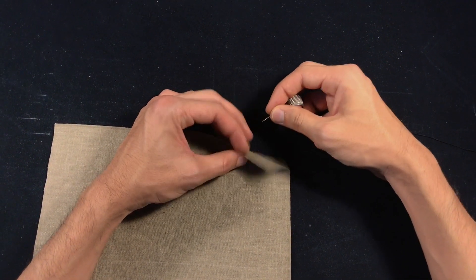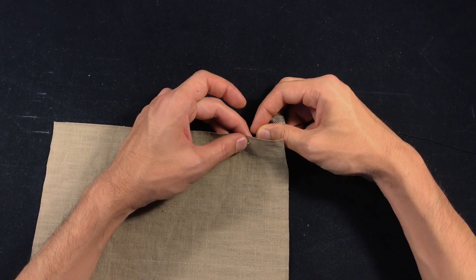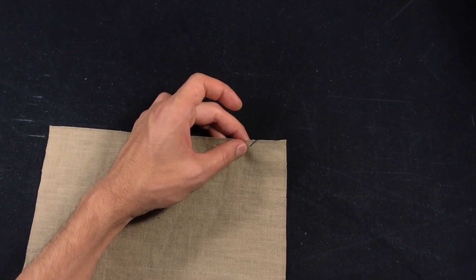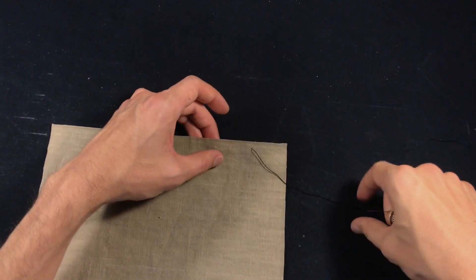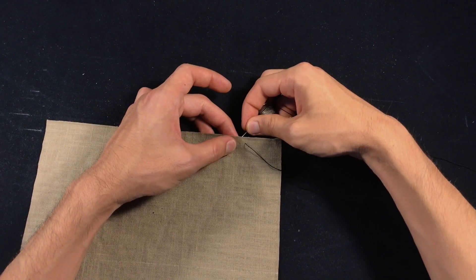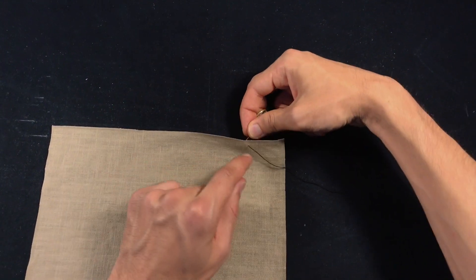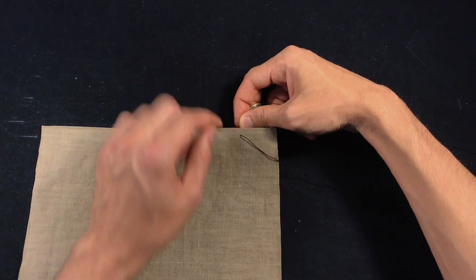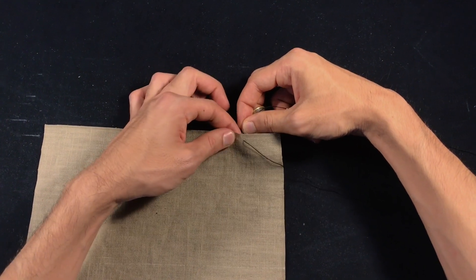You start off from behind the material and you're going to pull, and for the next stitch you're just going to move a stitch forward, let's say a quarter, in front of your previous stitch.